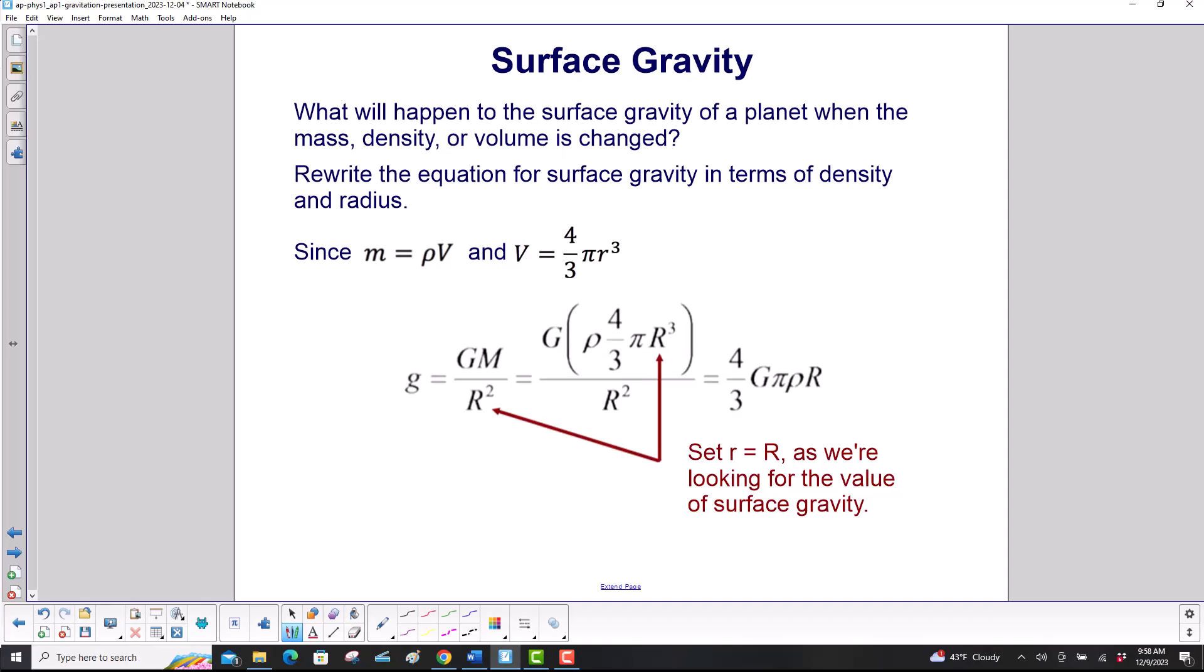Rewrite the equation for surface gravity in terms of density and radius. We're going to set the radius equal to the radius of our planet because we're looking for the value of g on the surface.